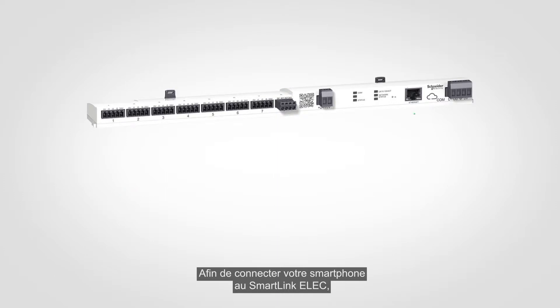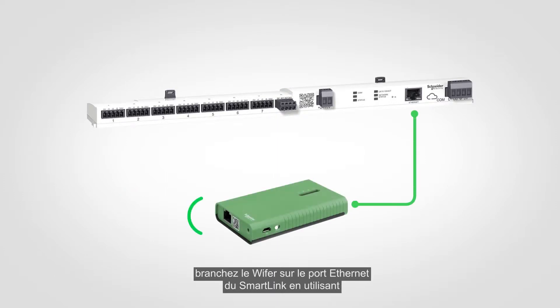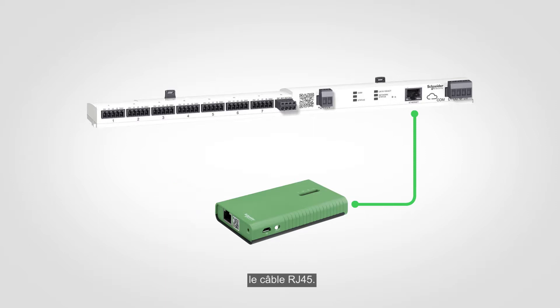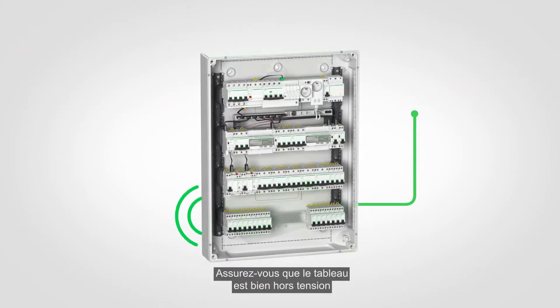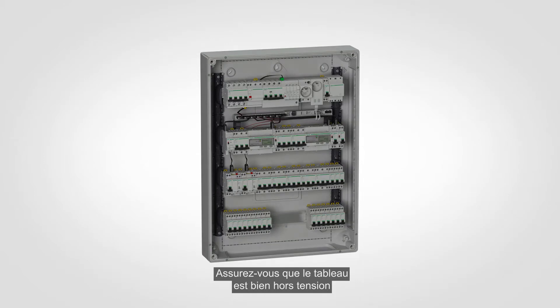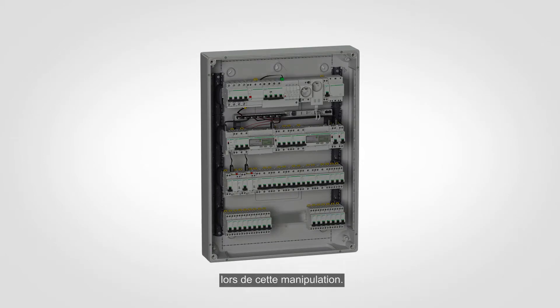To connect your smartphone to SmartLink Elec, connect the Wi-Fi to the Ethernet port of SmartLink using the RJ45 cable. Make sure that the electrical panel is switched off during this operation.